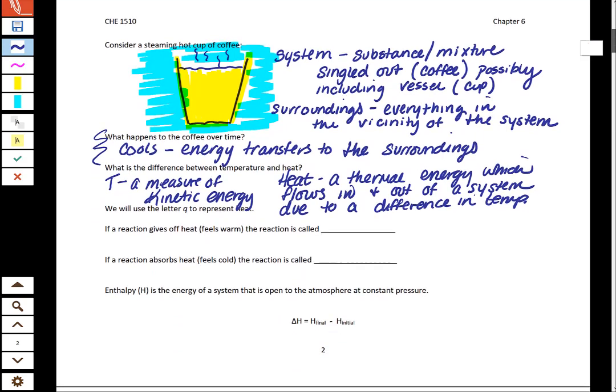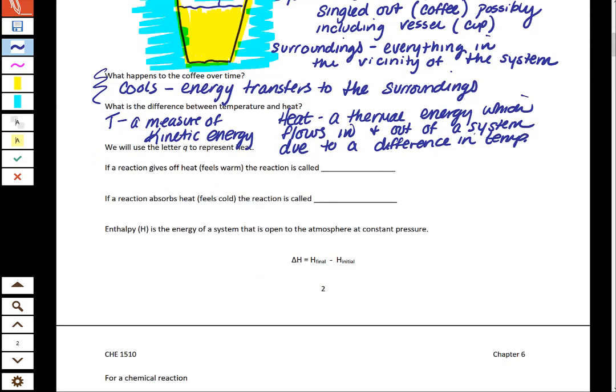Let's talk about one more thing related to Q. When we start looking at heat, we're going to represent heat with the letter Q. If a reaction gives off heat, that reaction is called exothermic. If a reaction absorbs heat, this is called endothermic.